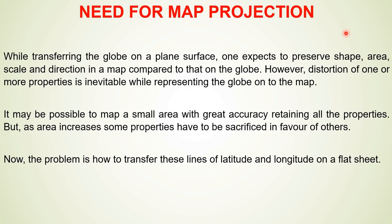However, you cannot cover the entire surface of a spherical ball with paper without creasing, and a hollow rubber ball cannot be cut open and placed flat on a table without stretching or distorting the surface. So a distortion of one or more properties is inevitable while representing the globe on a map. It is possible to map a small area with great accuracy retaining all properties, but as area increases some properties have to be sacrificed in favour of others. The question is how to transfer this graticule onto a flat sheet.